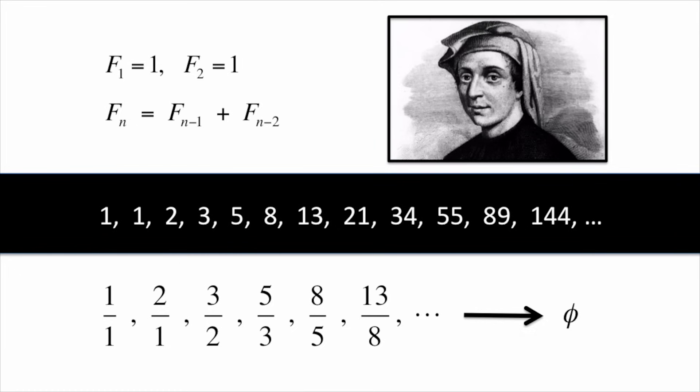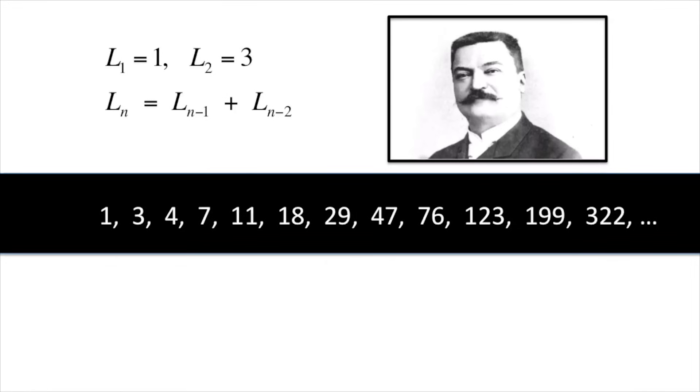But this isn't unique to the Fibonacci numbers. The Lucas numbers, named after Édouard Lucas, are also built by adding two terms to get the next term. The ratio of consecutive Lucas numbers also approaches the golden ratio.